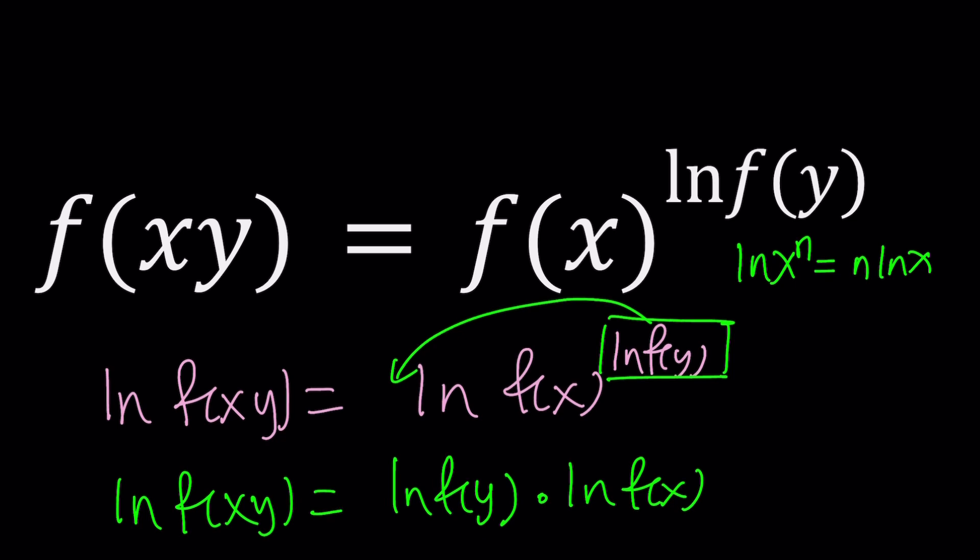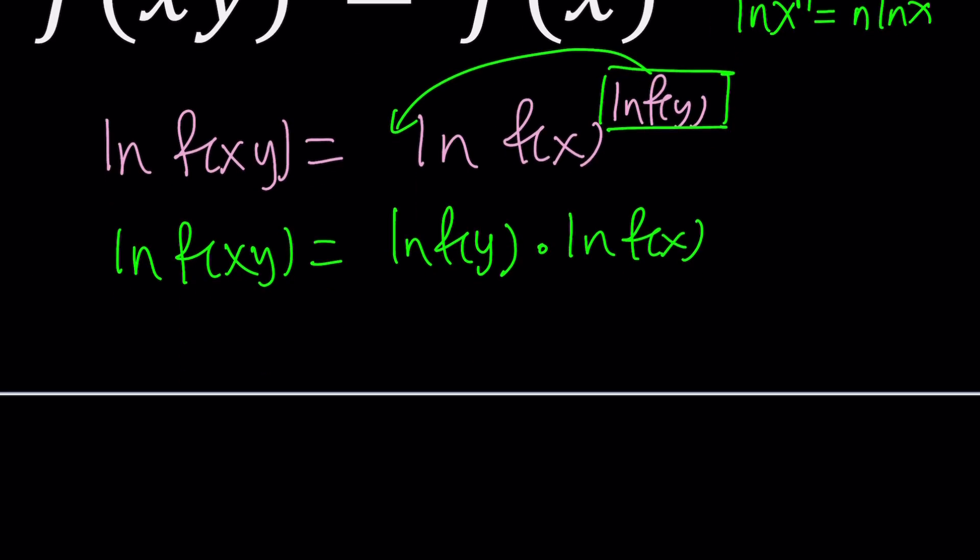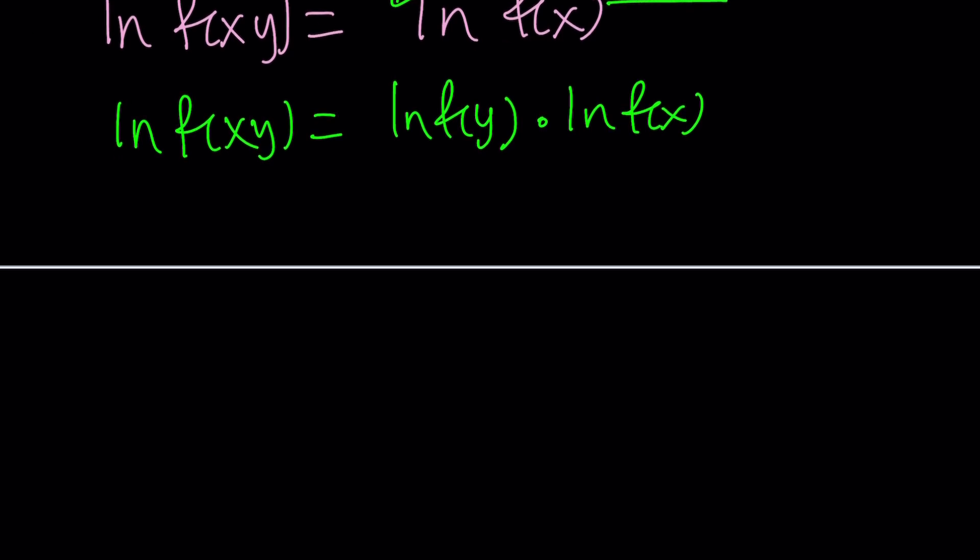This is super duper nice. You know why? Because now we can turn it into something we know. Remember I was talking about Cauchy's functional equations. There's actually, I think, four different ones. Let me go ahead and list them so that you can hopefully refresh your memory on those. If you haven't seen them before, that's fine too. But those usually look like this. And since I have f of x in this equation, I'm not going to use it. Instead, I'm going to use g of x, okay?